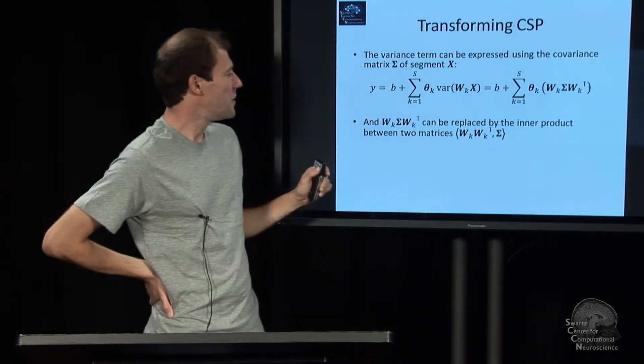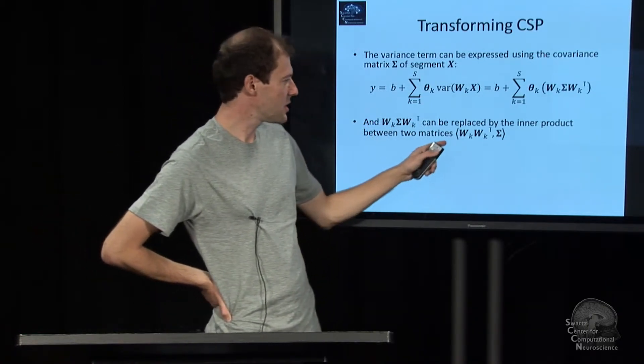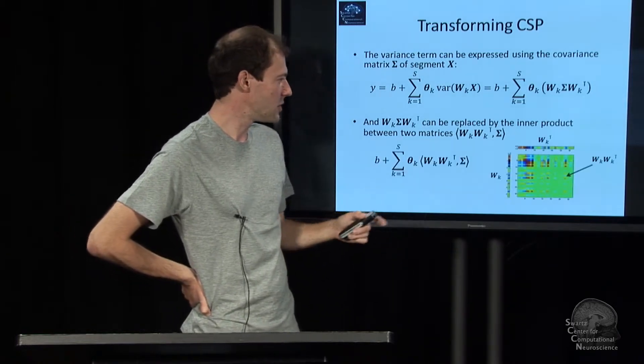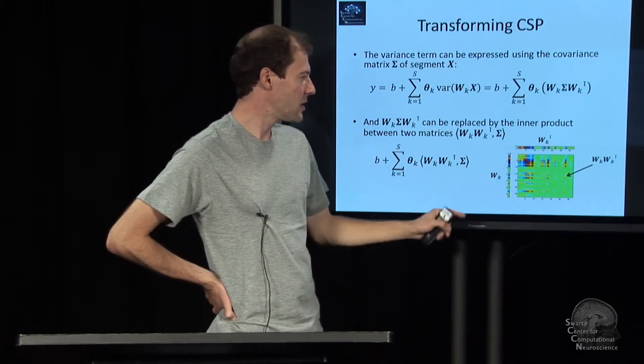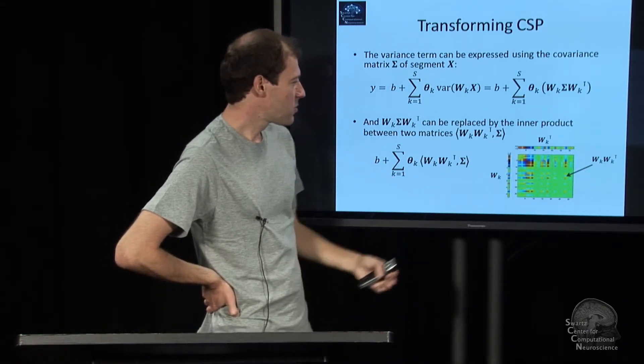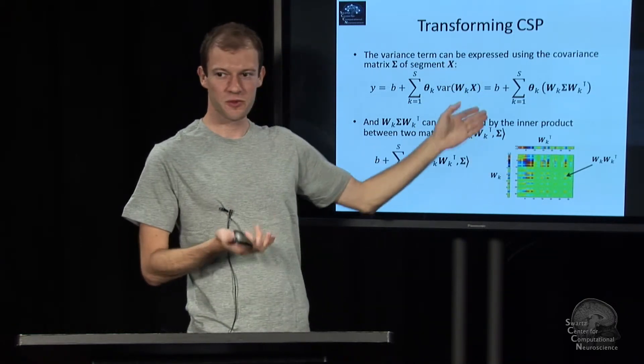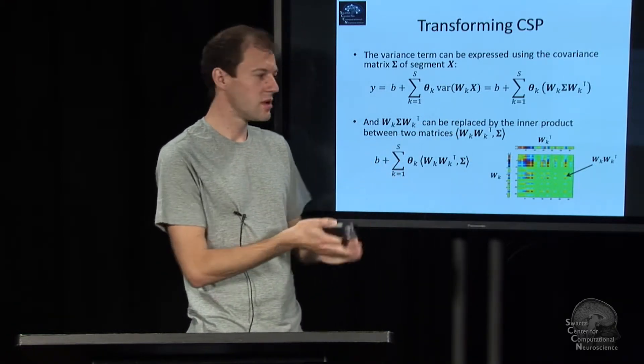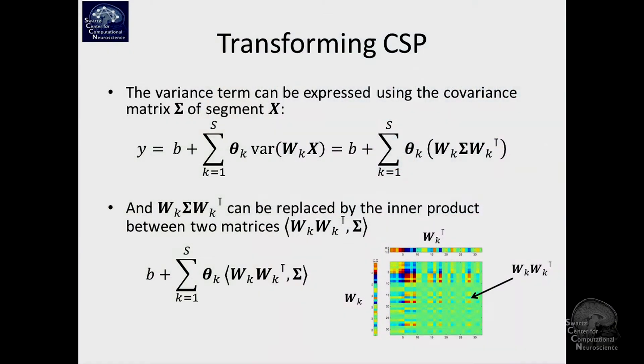It gets a little bit more interesting. This term, taking the vector and the matrix and vector transpose, you can rewrite this into an inner product between two matrices. The vector WK and the transpose, if you multiply this out, you get a matrix—a rank one matrix. The inner product between this matrix and your covariance matrix is equivalent to writing it this way. So we can just substitute this part by this new part.